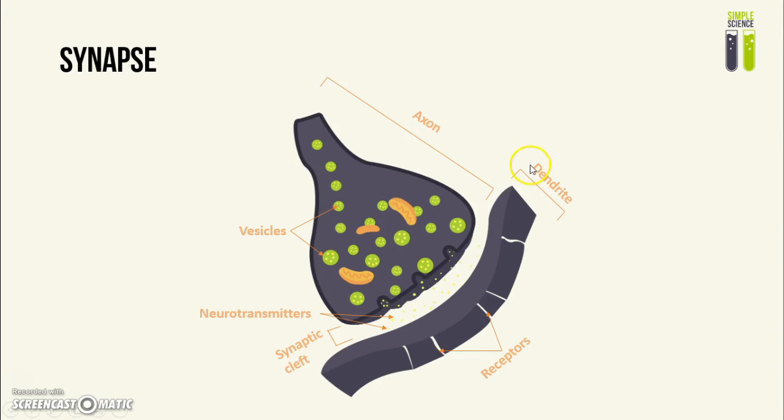Structure of a synapse: the main things you have to take note of is a synaptic cleft, which is just the gap between the two neurons right here, and there are vesicles which contain neurotransmitters, which are the little yellow dots inside them, and there are neurotransmitter receptor molecules right here.